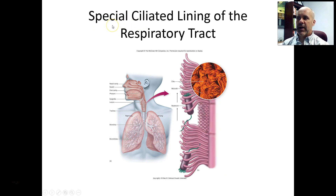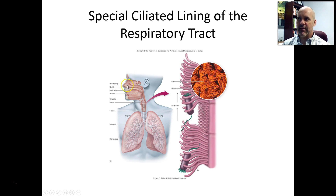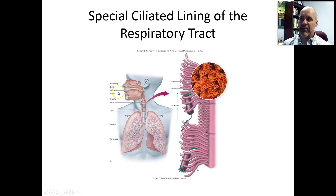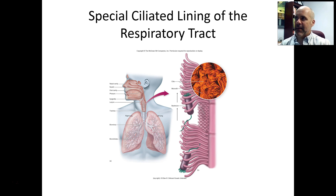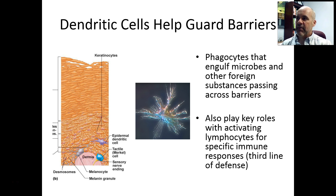Another barrier feature is the ciliated lining of the respiratory tract. The inner lining of the trachea is a pseudostratified ciliated epithelial tissue, and the nasal cavity also has a ciliated lining. The cilia trap mucus, microorganisms, and dust particles. The cilia sweep microorganisms upward in the trachea and backward in the nasal cavity toward the pharynx, where you either cough them out or swallow them into your stomach. Stomach acid pH is so low it kills most microorganisms that land there.